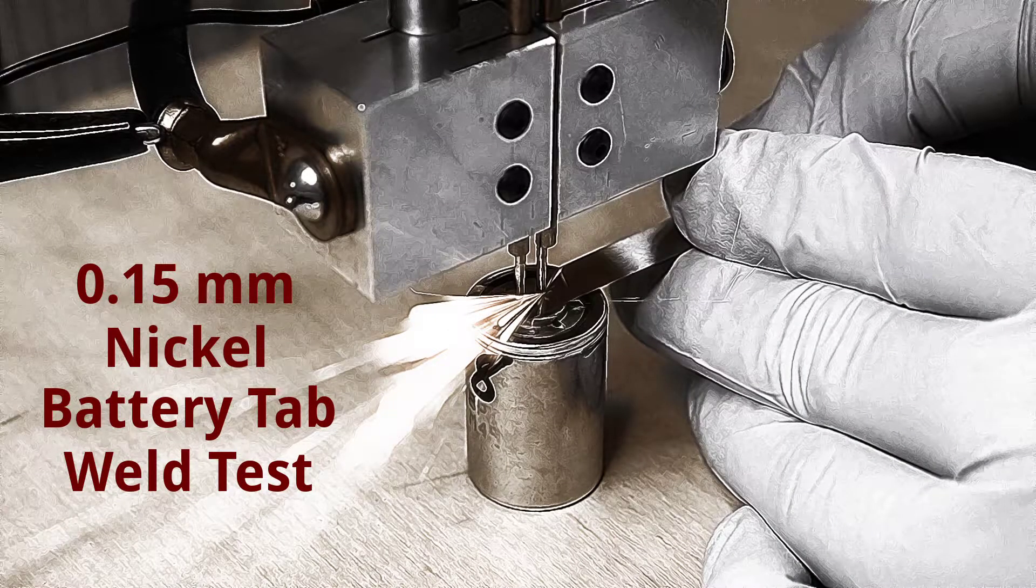Here are some spot welding tests of 0.15mm thick nickel strip using a tip center to center distance of 0.17 inches and about 6 pounds of tip pressure.